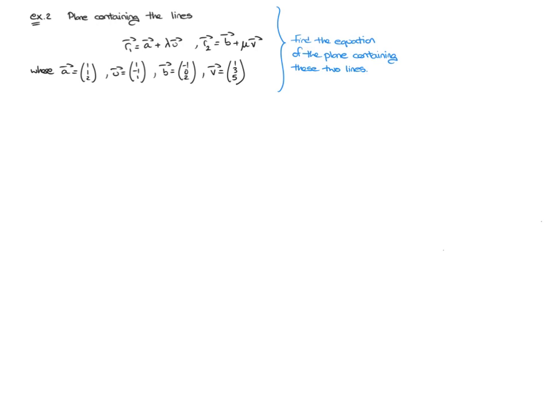Vector B has coordinates negative one, zero, two. And finally, vector V has coordinates one, three, five. Now, as is always pretty useful, it's a really good idea to start with some sort of generic sketch to get an idea of what we're dealing with.